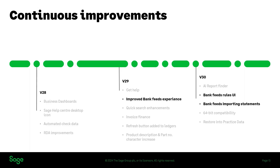Coming back to the timeline, especially from version 29 we really started to implement changes to bank feeds by changing the look and feel in the version 29 release. In version 30 we've continued those improvements by updating the create bank feeds rules window, the rules approval screen, and the manage rules window. You also now have the ability to import statements or transactions into bank feeds for those banks that are not compatible with an automatic feed. Let's take a look at that in more detail.